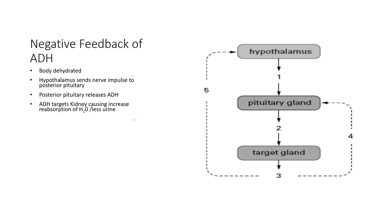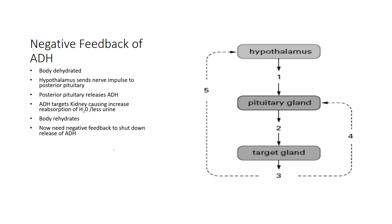ADH then targets the kidneys and causes increased reabsorption of water. So we're going to have less urine, more concentrated urine, but less urine, and we're going to retain some of that water. That rehydrates the body. ADH has now accomplished its job — what we need to do is shut it down. We don't want to keep reabsorbing out of the kidneys, so we have to get ADH back under homeostasis.